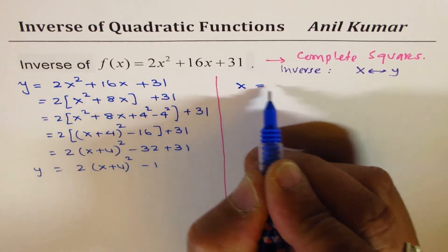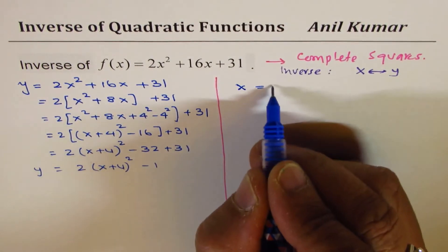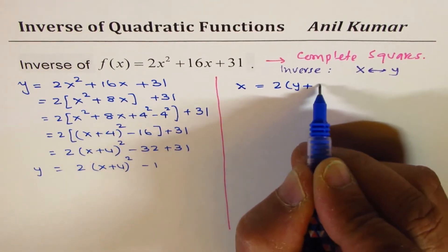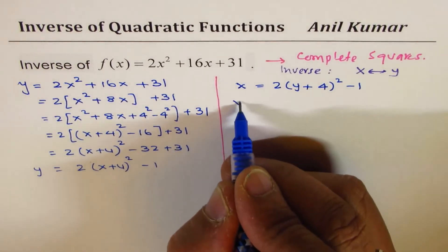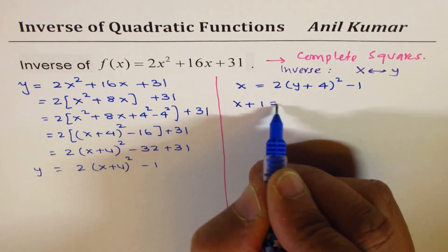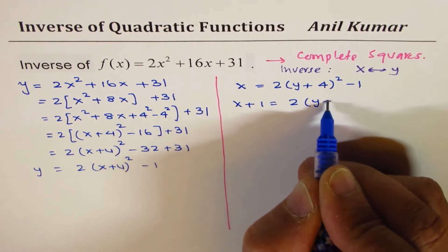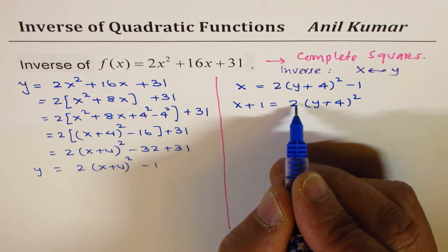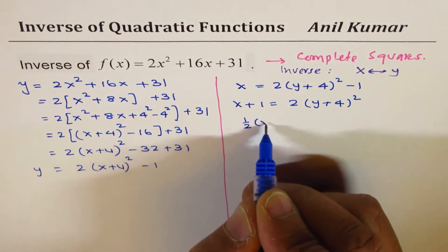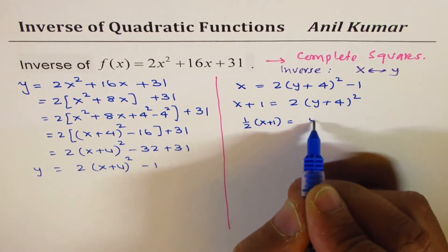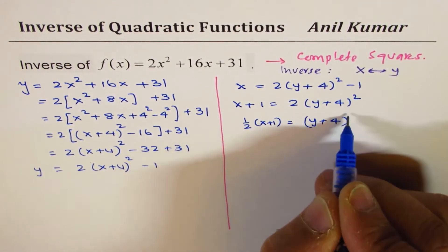So, I could write this as x equals to 2 times y plus 4 whole square minus 1. So, we can bring minus 1 to this side. It becomes 2 times y plus 4 whole square. Dividing by 2, we get half of x plus 1 equals to y plus 4 whole square.